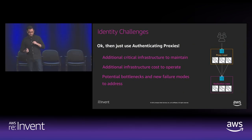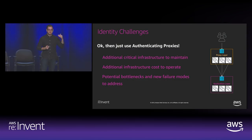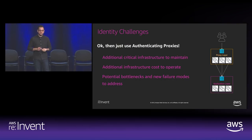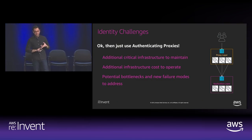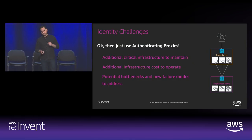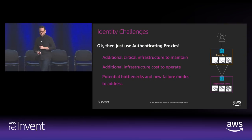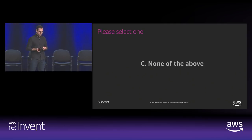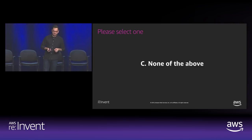Another option is authenticating proxies — a popular pattern that works well and moves responsibility further up the stack away from your application layer. However, it creates an additional layer of critical infrastructure to maintain: additional cost, complexity, and failure modes. Your application is only as good as that authentication proxy layer. Makes things easier for developers, but not for us. Between those two options, we chose neither — we kept thinking about alternative solutions.